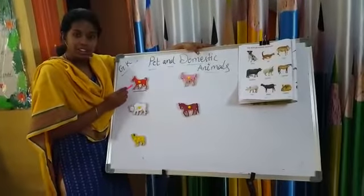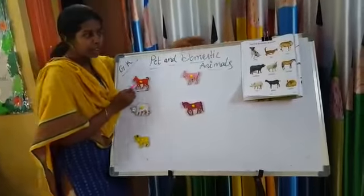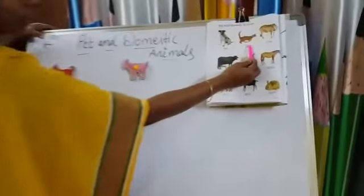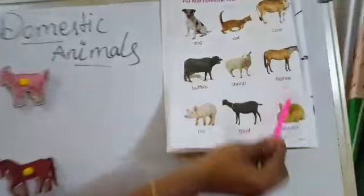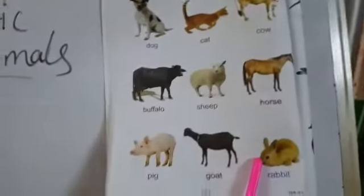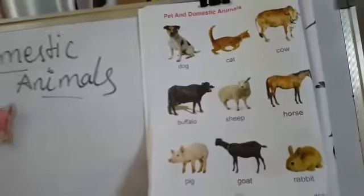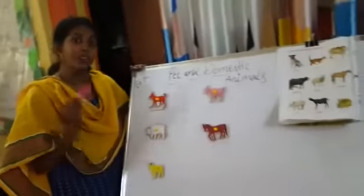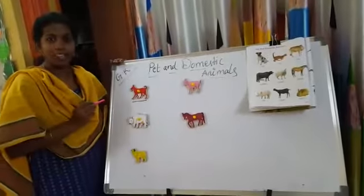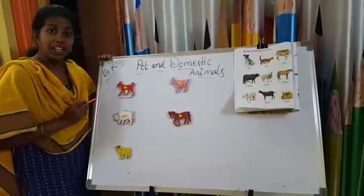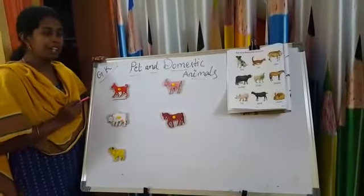Examples of pet animals are dog, cat, and rabbit. We keep these animals at home, so those are called pet animals. And children love pet animals.